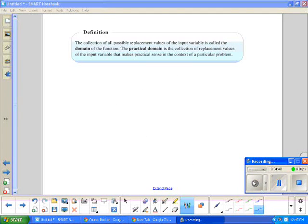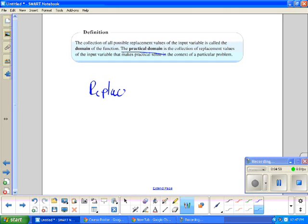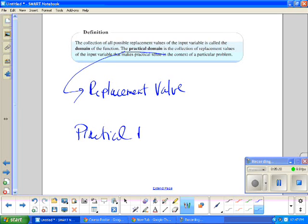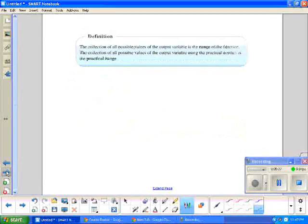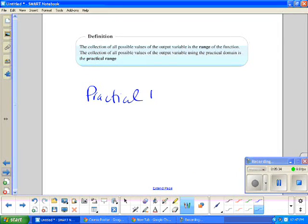We're going to look at a couple different topics that you've looked at before. We've used before the words replacement value to talk about reasonable things that we would be plugging into certain problems. And practical domain is pretty much the exact same concept. And so if you see the word practical domain, that is referring to practical replacement values. And on another note, when you hear the word practical range, that's talking about reasonable outputs.